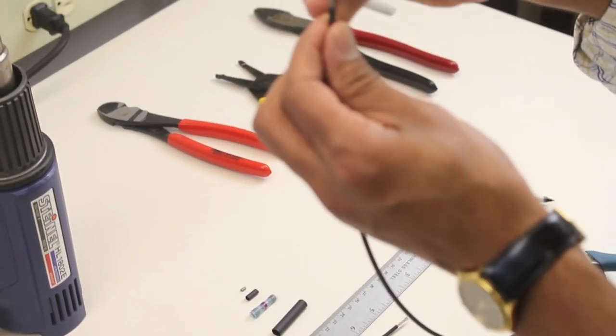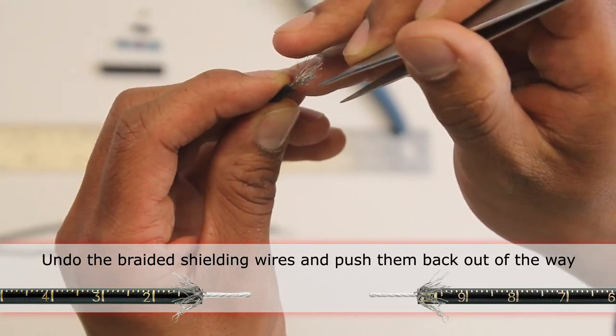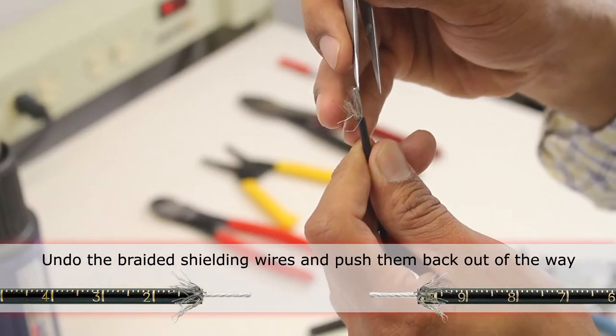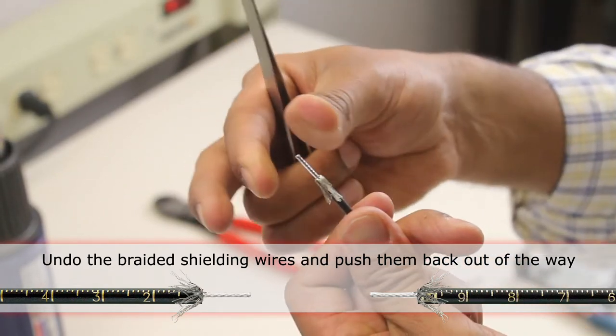I can take the shielding away from the main cable. Pull it back, all the way back so that it's clear.